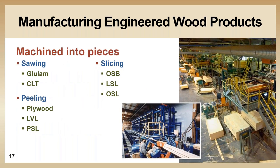Step one: we need to take the log apart. This is done a few different ways depending on the end product. Slicing produces flakes, peeling the log produces veneers, and sawing gets a solid piece of wood. It's actually pretty easy to identify which product uses each type of cut wood — especially the ones that start with slicing the logs into flakes, because you can usually see the flakes on the surface of the final product.